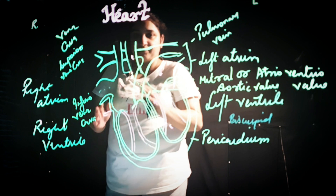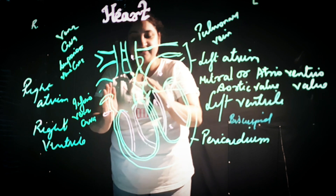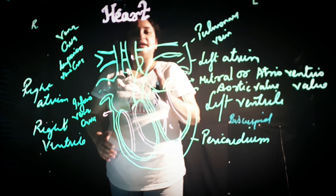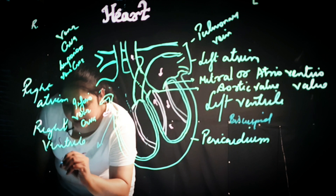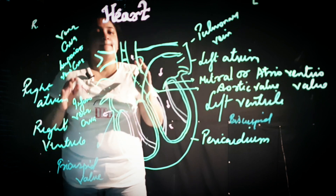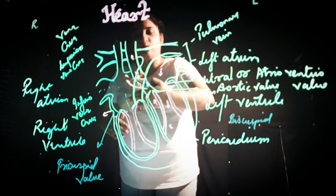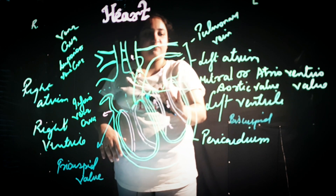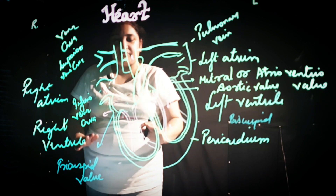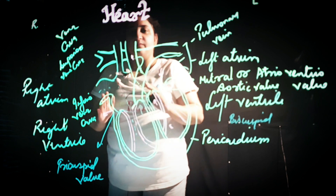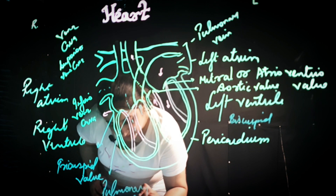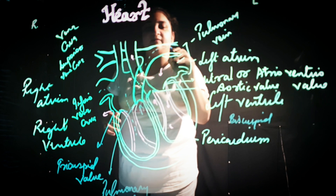The blood is collected in the right atrium, it expands, and the right ventricle contracts. The blood then moves down through another valve known as the tricuspid valve. It is called the tricuspid valve because it has three cusps, while the mitral valve on the left side is bicuspid, having two cusps. Blood is then passed to the right ventricle and pushed through the pulmonary valve, traveling onward from there.